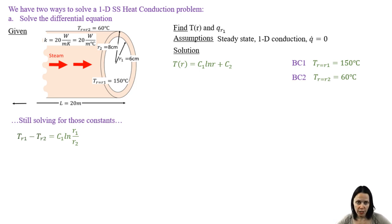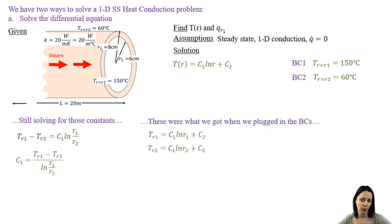If we rearrange that equation, we get an expression for c1. And then we can go back to those two equations that we got when we plugged in the boundary conditions, pick either one, and substituting in, we get the value for c1. Substituting in the value for c1, we get the value for c2.